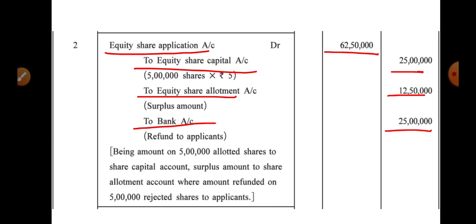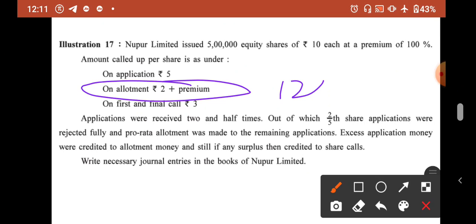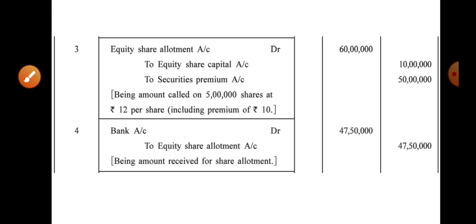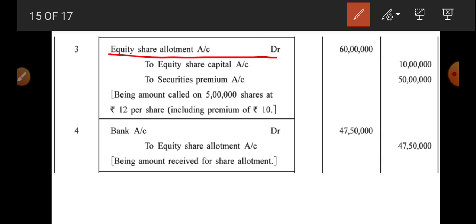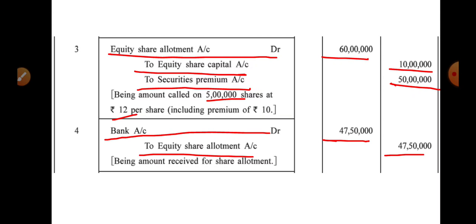Now allotment entry: Allotment called at ₹12 total (₹2 face value + ₹10 premium). Entry: Equity Share Allotment Account Dr. 60,00,000 / To Equity Share Capital Account ₹10,00,000 (5 lakh × ₹2) / To Securities Premium Account ₹50,00,000 (5 lakh × ₹10). Bank receives allotment money after adjusting advance: Bank Account Dr. 47,50,000 / To Equity Share Allotment Account 47,50,000.